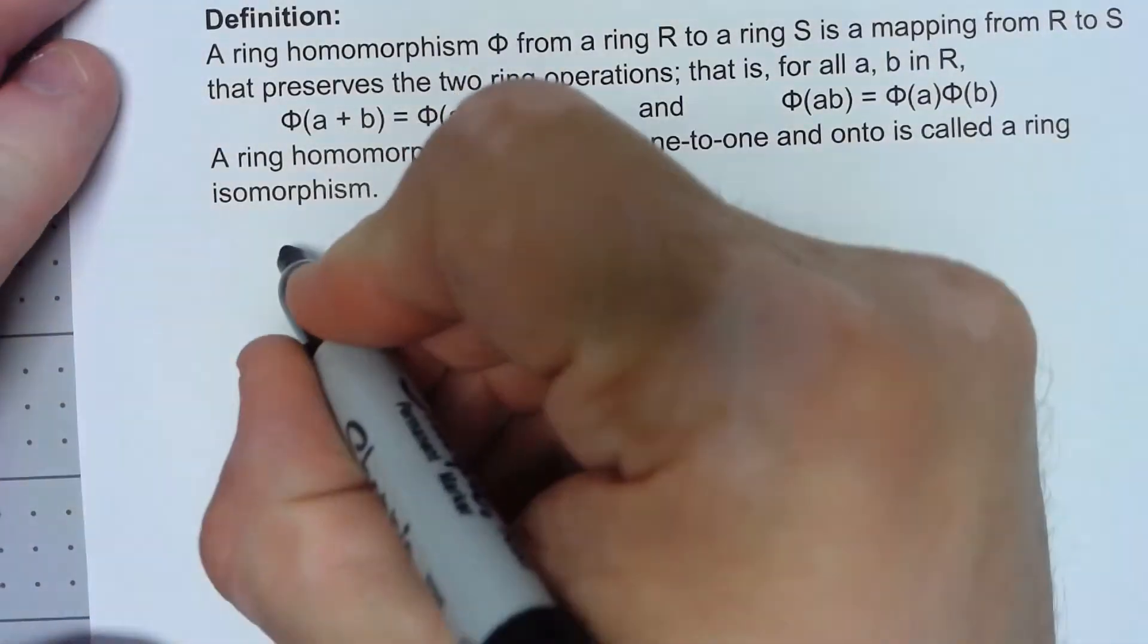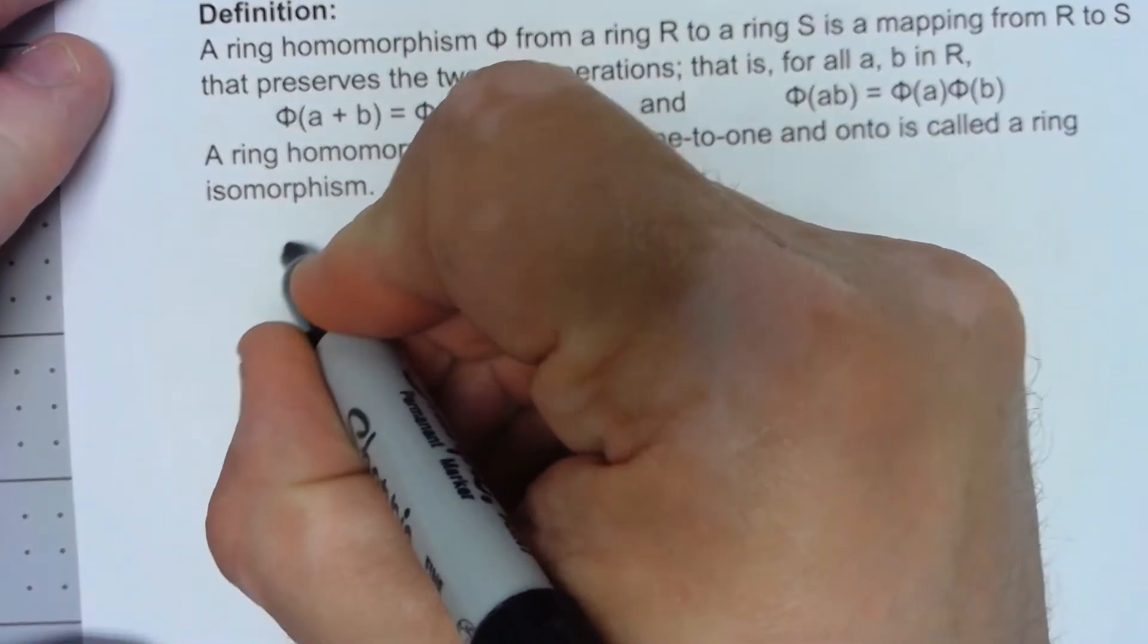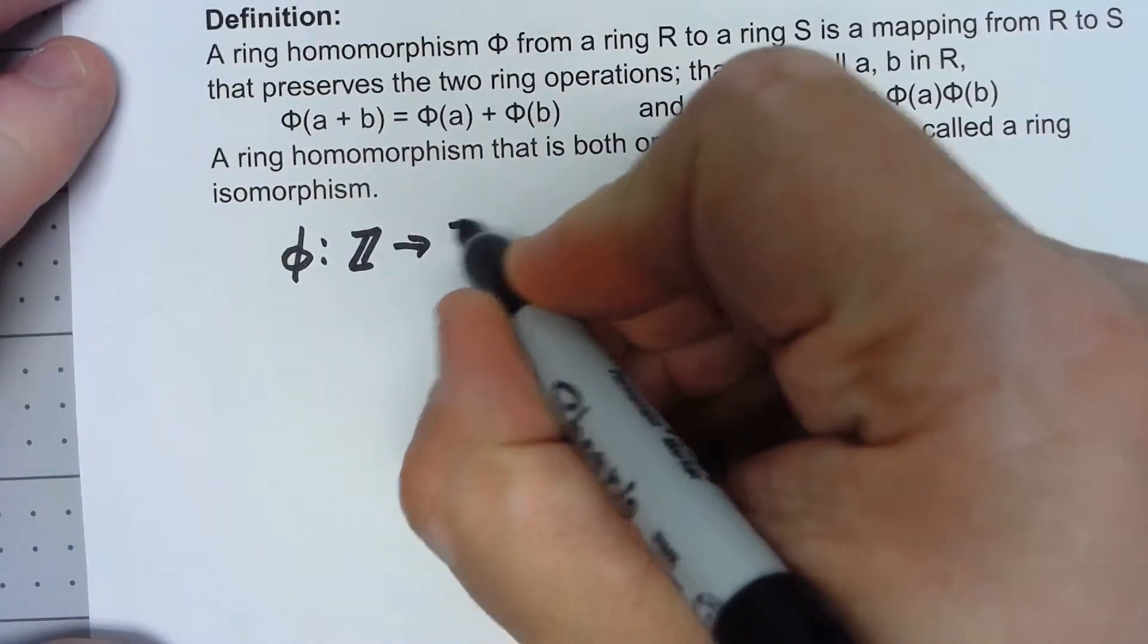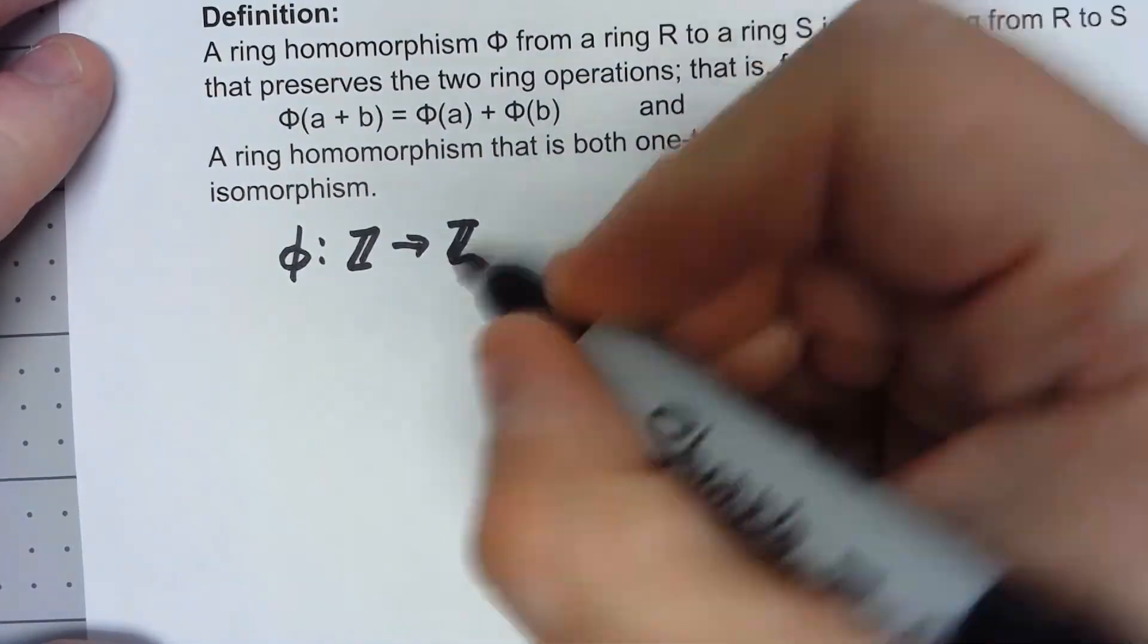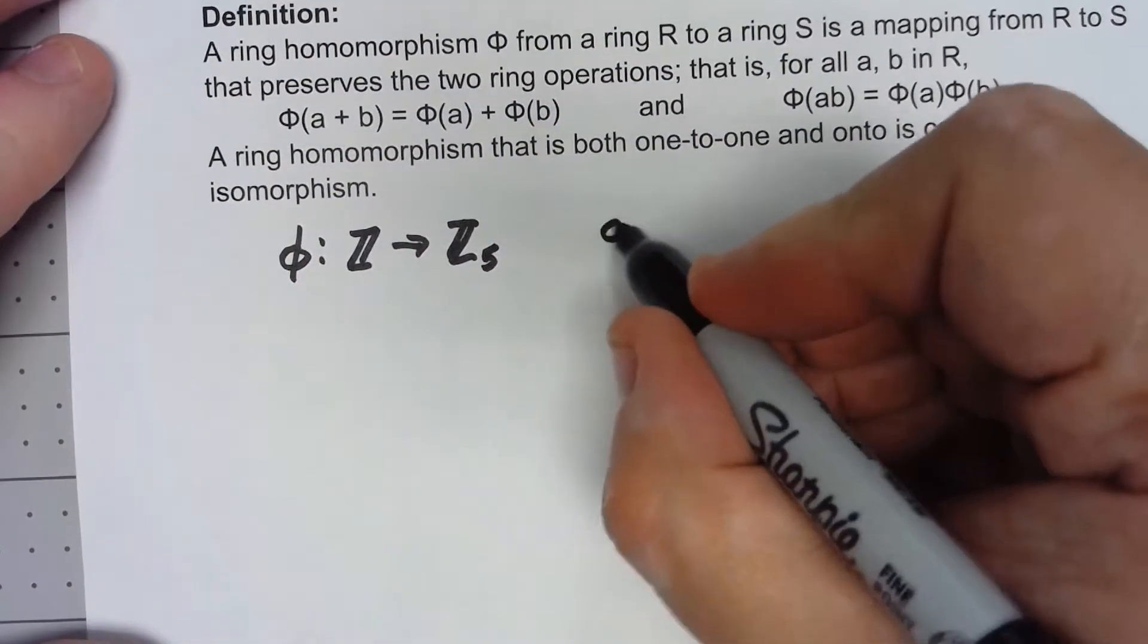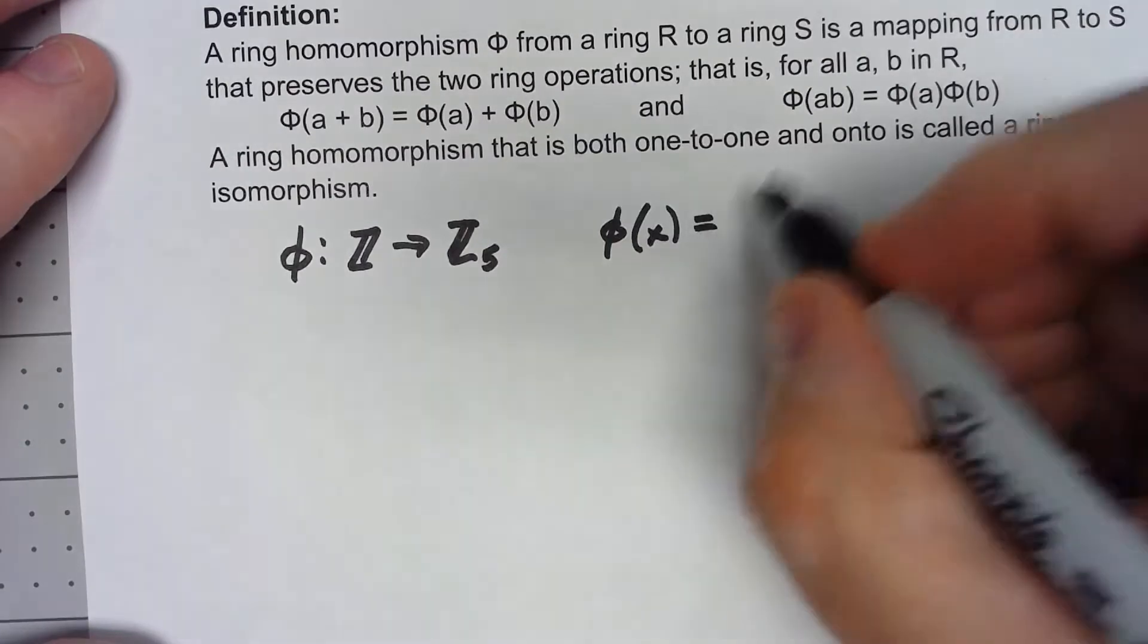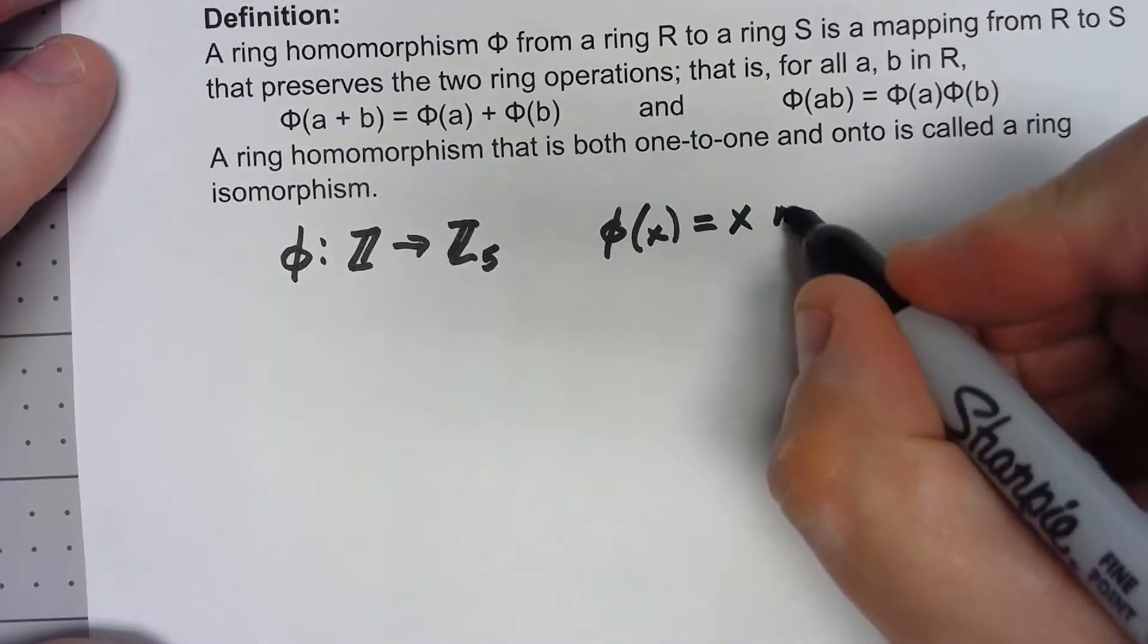Let's say I'm going from φ mapping the integers to say Z₅ and the function is that φ(x) equals x mod 5.